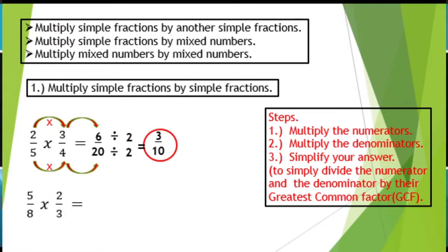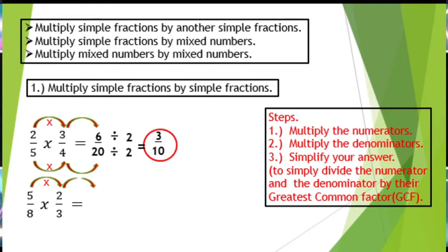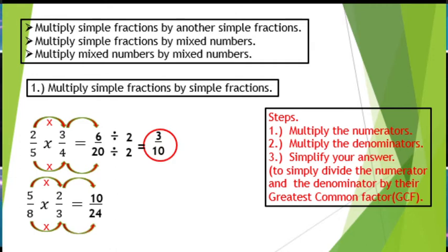Next example is 5 over 8 times 2 over 3. Again, using the same steps, multiply the numerators. We have 5 times 2 is equal to 10. And multiply the denominators. We have 8 times 3 is equal to 24. So, we have 10 over 24.